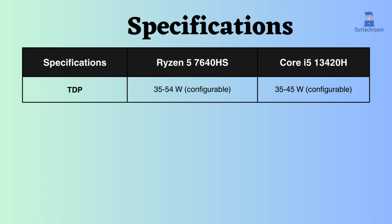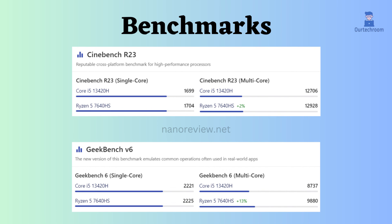Consequently, under lower TDP, power consumption is reduced, leading to potentially better battery performance. However, this difference is only marginal. Now, let's examine benchmark comparisons. In this scenario, for Cinebench R23 multicore and Geekbench V6 multicore, the Ryzen appears to be slightly superior.